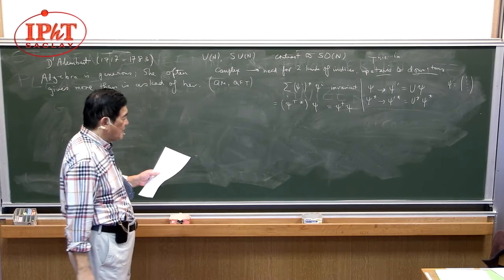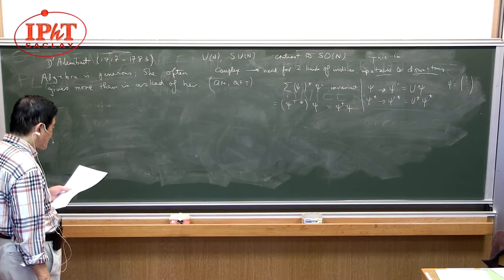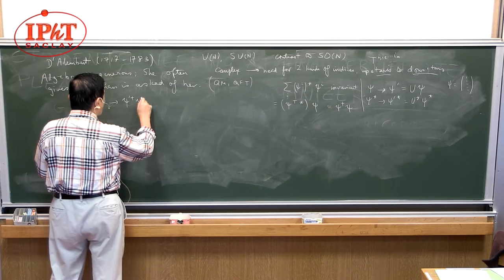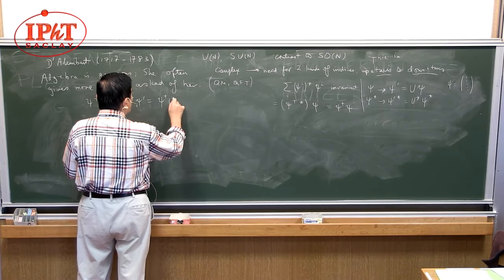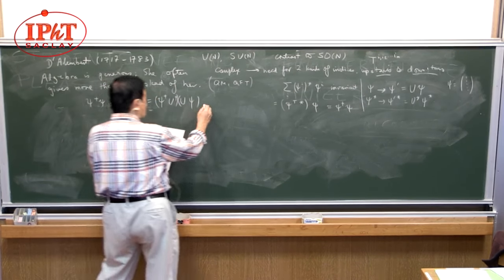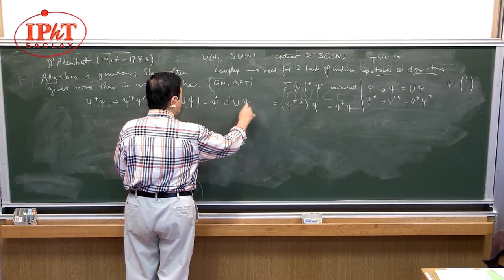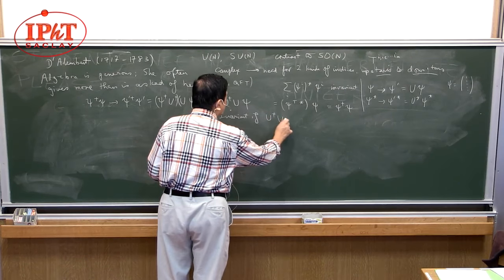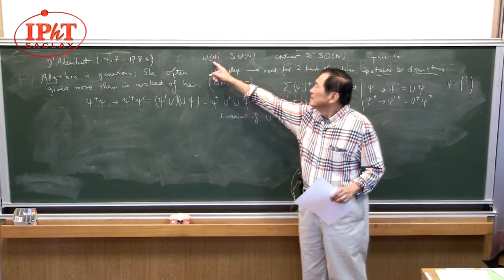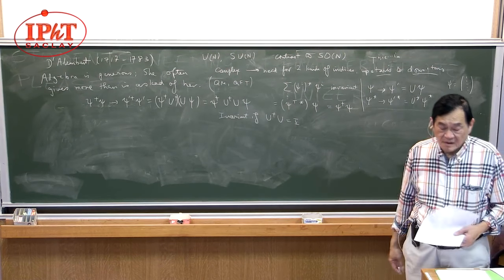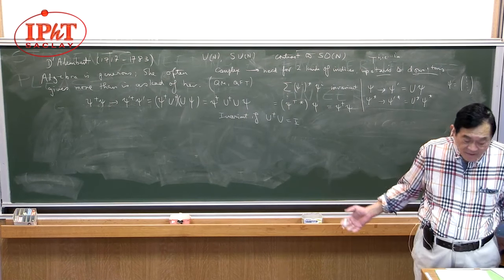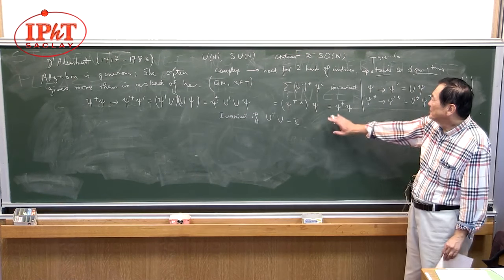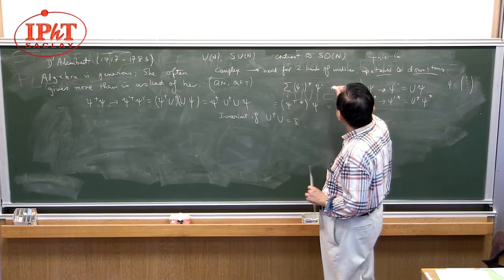Ψ†Ψ goes into Ψ'†Ψ' = Ψ†U†UΨ = Ψ†Ψ, by associativity, since U†U = I for a unitary matrix. That's how we are motivated to study U(N). Before quantum mechanics, physicists would have had no reason to study U(N) at all — just like finance people have no reason to study U(N).